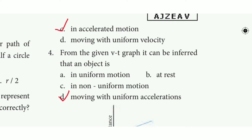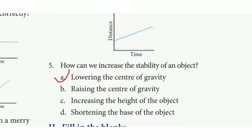Question 4: From the given BT graph, it can be inferred that the object is — the answer is option D: moving with uniform acceleration. Question 5: How can we increase the stability of an object? The answer is option A: lowering the center of gravity.